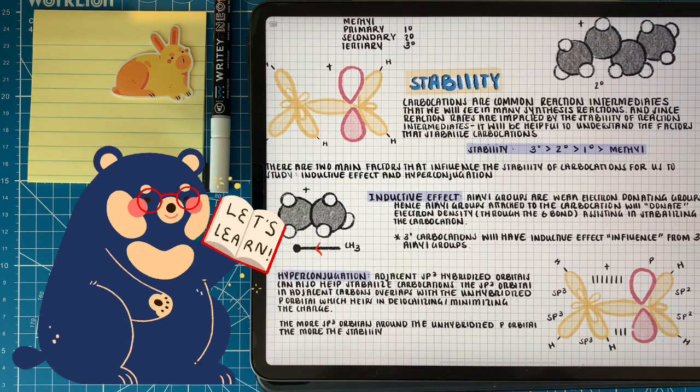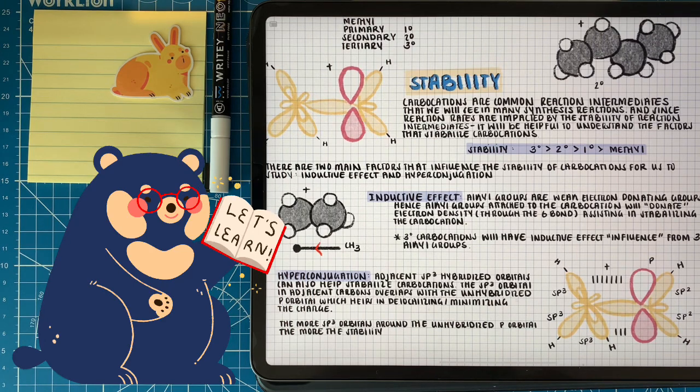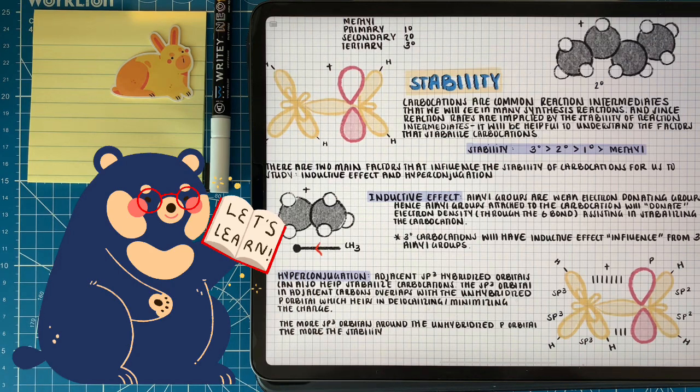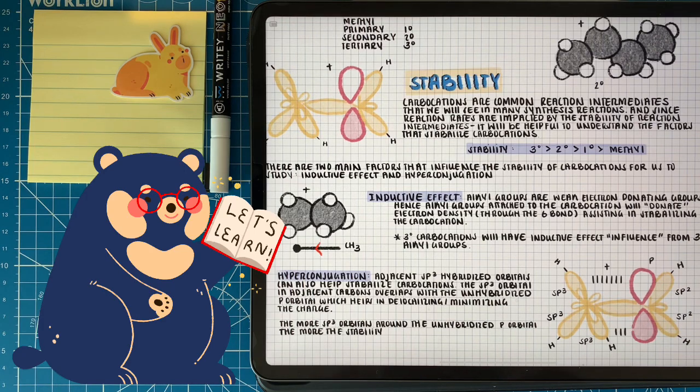Hyperconjugation is also going to lower the power of that positive charge, but it does it a little differently. Instead of doing it through a sigma bond or an immediate connection, this works through a slight overlap between the unhybridized p orbital and neighboring sp3 hybridized orbitals. So if we have a hydrogen, we don't have that sp3 hybridized orbital, but if we have an alkyl group, we do. By that slight overlap, it decreases the charge, or the power of that positive charge. So just imagine with the tertiary carbocation, we have three sp3 hybridized orbitals that are slightly overlapping with the unhybridized p orbital, helping to stabilize that positive charge.